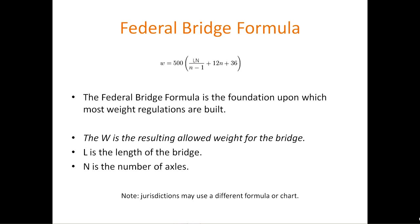The Federal Bridge Formula is the foundation upon which most weight regulations are built. The W in the formula is the resulting allowed weight for the bridge. L is the length of the bridge, and N is the number of axles within the bridge. Please note, jurisdictions may use a different formula or chart.